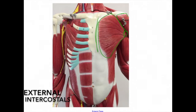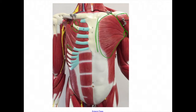External intercostals are located here. They originate from the inferior borders of the ribs and insert into the superior borders of the next ribs. The action is to elevate the ribs.